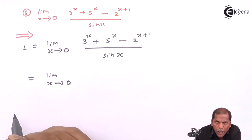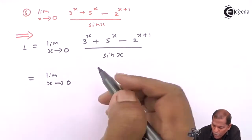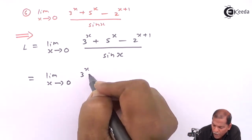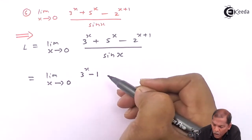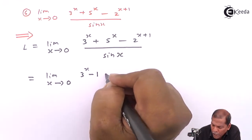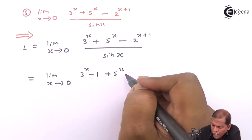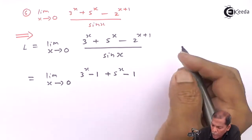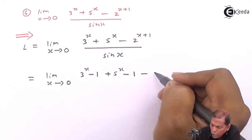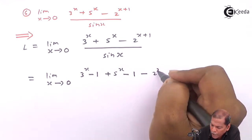Now here 3 raise x is a positive term, so we have to write 3 raise x minus 1. Then again 5 raise x is also positive term, so we write plus 5 raise x minus 1. And then the next term 2 raise x plus 1 is negative.